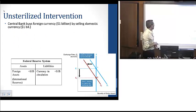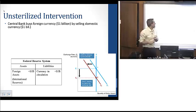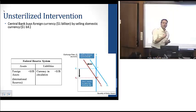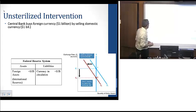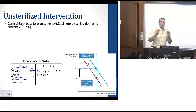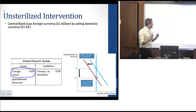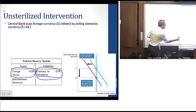Now let's look at the opposite case, where a central bank is buying foreign currency. They're adding to their holdings of international reserves by a billion dollars, and doing that by selling domestic currency. In the case of the Fed, they would literally be printing money and using that to buy up international reserves. On the Fed's balance sheet, it's adding to its holdings of international reserves, increasing those by a billion dollars, by printing up a billion dollars in currency.